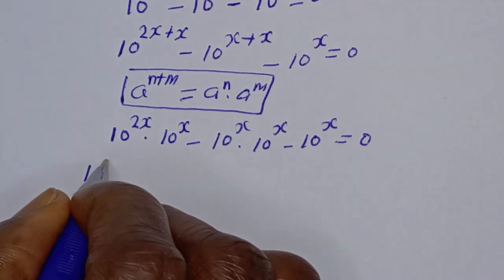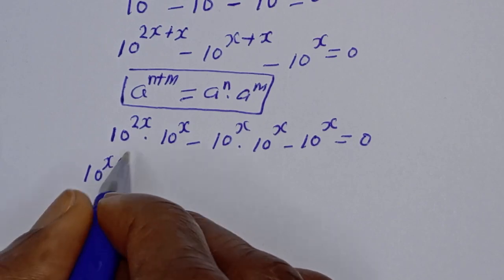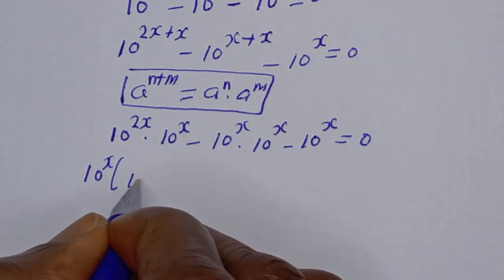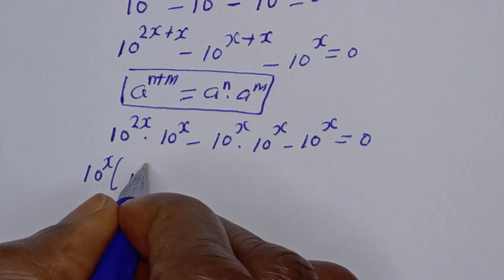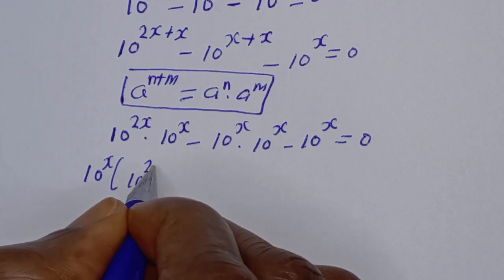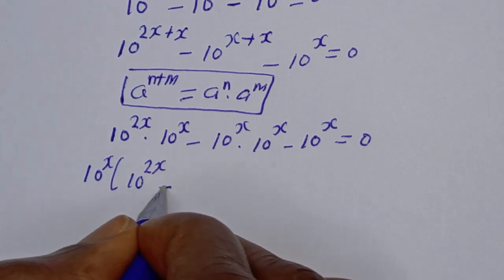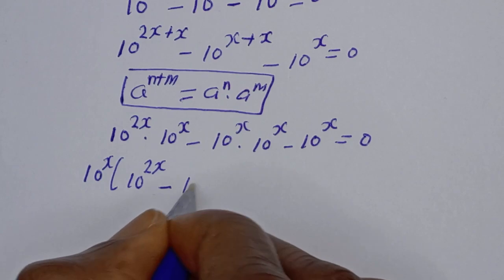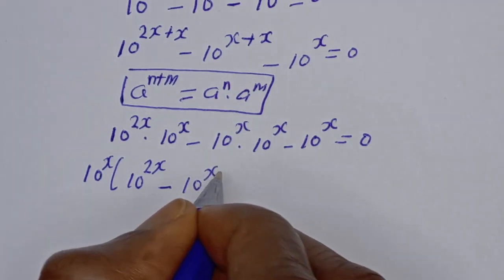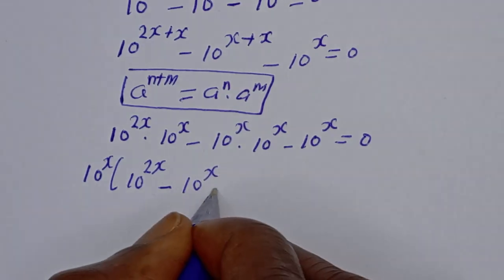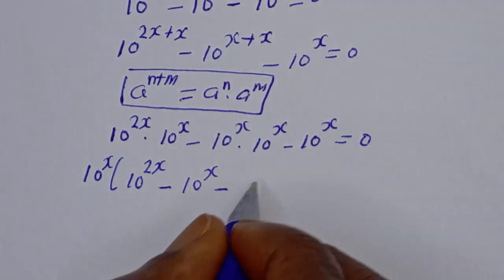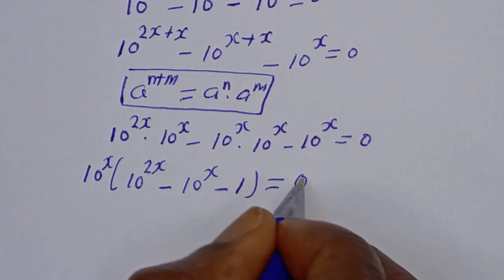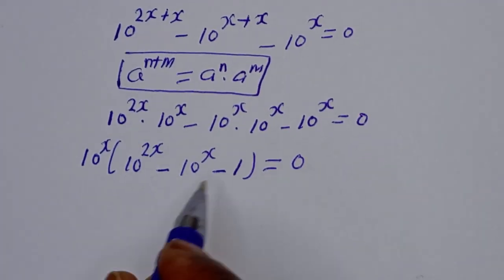Let's factor it out: 10 raised to power s, bracket — this divided by this gives 10 raised to power 2s, minus this divided by this gives 10 raised to power s, minus this divided by this gives 1 — is equal to 0.